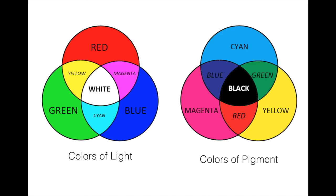Pigment is a bit different - cyan, yellow, and magenta are your primary colors. Mix cyan and yellow and you get green. Mix cyan and magenta and you get blue. Mix magenta and yellow and you get red. Mix all the pigments together and you get black. We're going to be doing some labs involving mixing colors and pigments in class. Don't forget our next video will be on optics and reflection and refraction of light and mirrors. As always, if you have any questions please let me know, and thanks for watching.